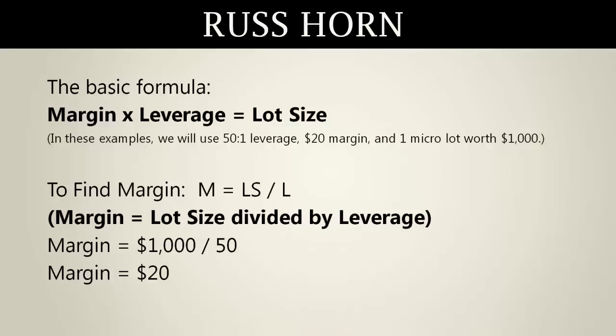In this example, we're going to find the margin. We take that basic formula — margin times leverage equals lot size — and rearrange it in order to find the margin. Margin equals lot size divided by leverage. Plugging in the numbers: the margin equals the lot size of $1,000 divided by the leverage of 50. So 1,000 divided by 50 gives us 20. The margin we need is $20.